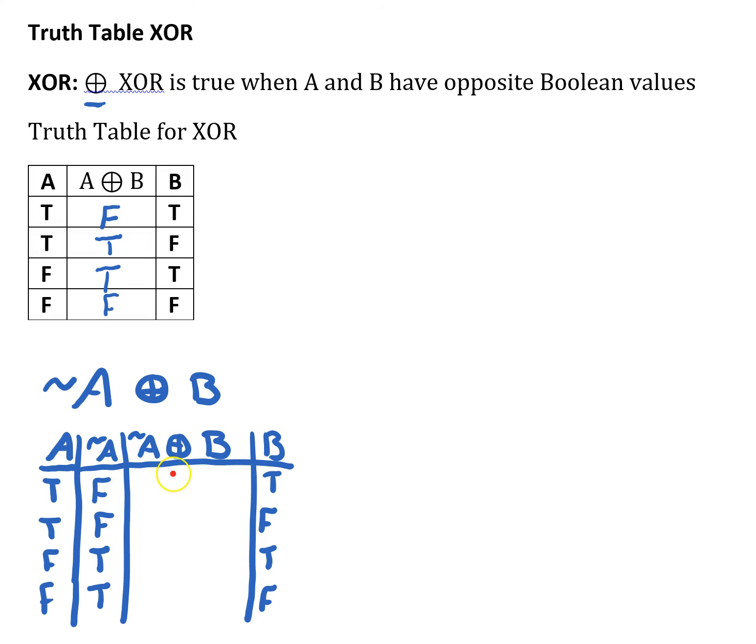FALSE, TRUE gives us opposite boolean values, so it's TRUE. FALSE, FALSE, those are the same, so it's FALSE. TRUE, TRUE, those are the same, so it's FALSE. TRUE, FALSE, those are opposite, so this is TRUE.